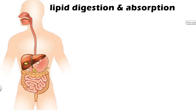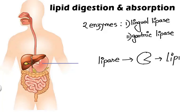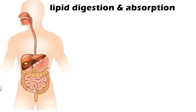This is your digestive system. Let's see what happens to the lipid after ingestion. Lipid digestion begins in the stomach with the help of two enzymes, lingual lipase and gastric lipase. Lipase is the enzyme which breaks down the lipid. The gastric lipase from stomach and the lingual lipase from saliva together act on triacylglycerol and break it down into glycerol and fatty acid.